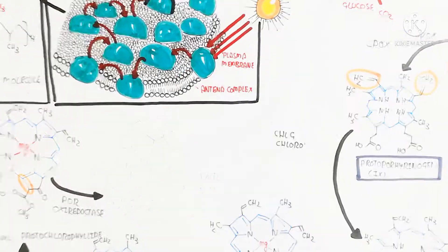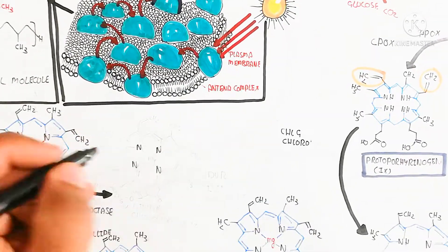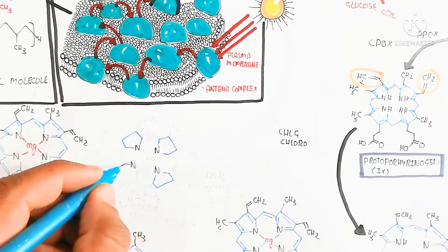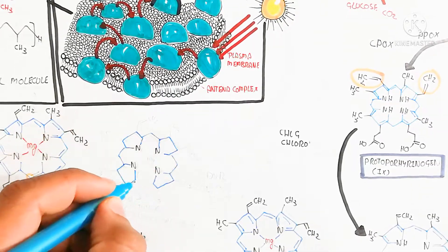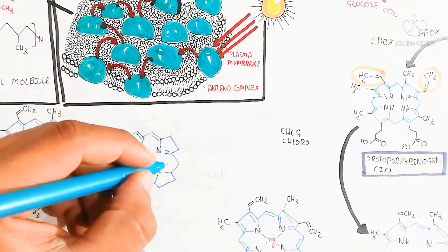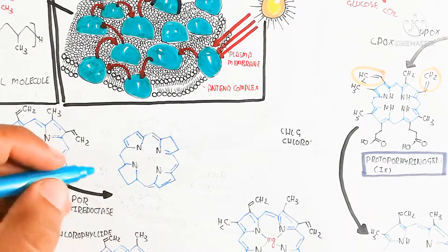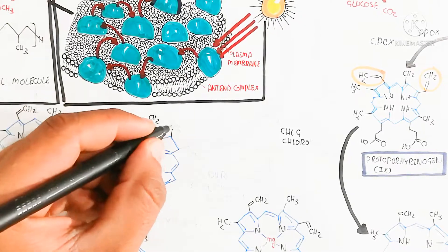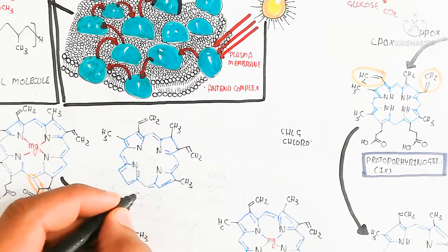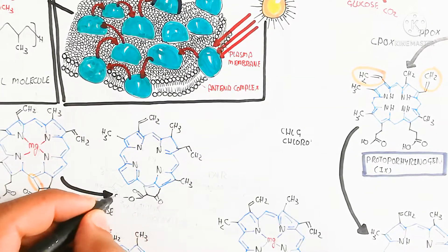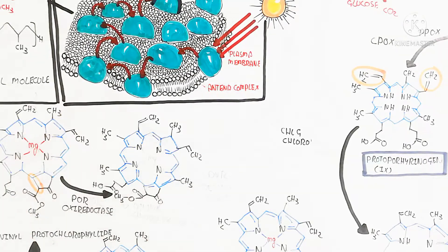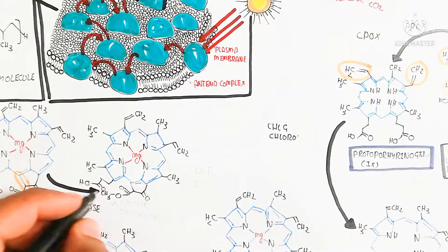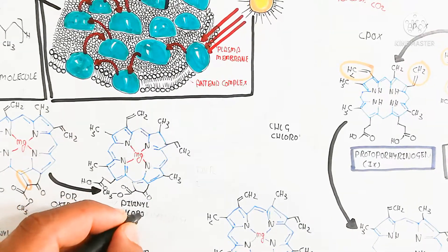The protochlorophyllide oxidoreductase enzyme is then used to produce divinyl chlorophyllide 9. The differentiation between divinyl protochlorophyllide 9 and divinyl chlorophyllide 9 can be seen by the changes in their structure.